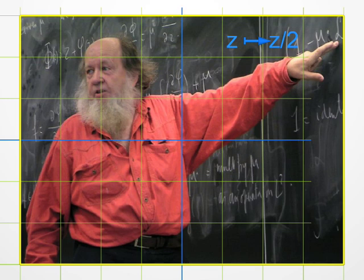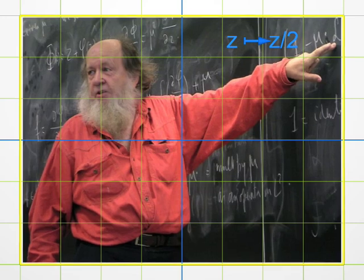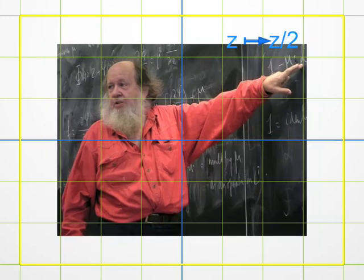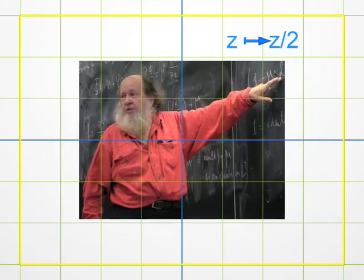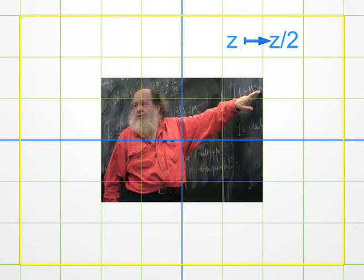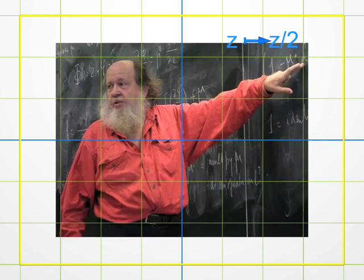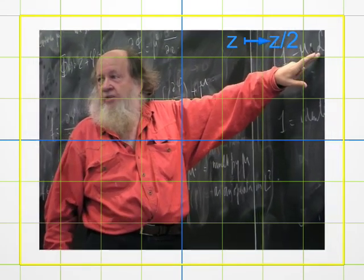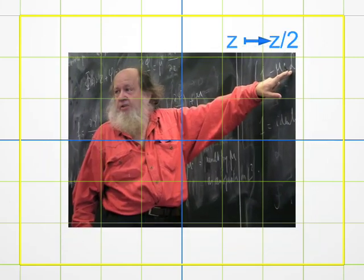Let's begin with something simple. The transformation Z goes to Z over 2. Each point on the photo corresponds to a complex number Z that's divided by 2. We get another point, its image by the transformation, hence a new picture. You see, no surprise, I just shrank to half the size, since each Z has been divided by 2. This transformation is called a homothety.